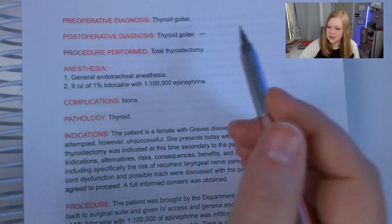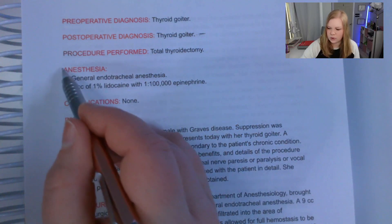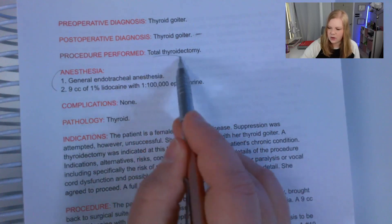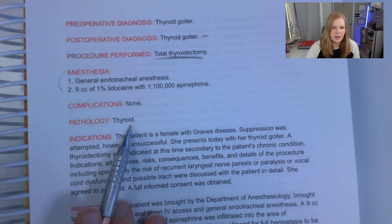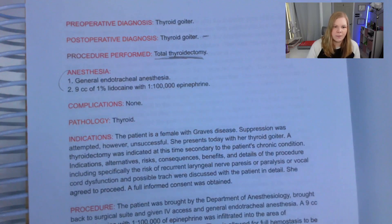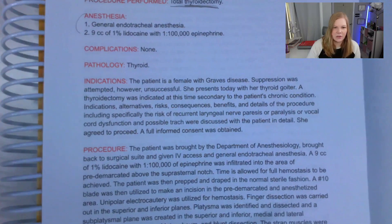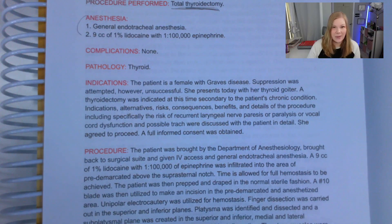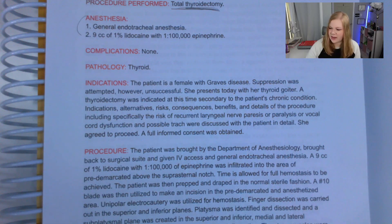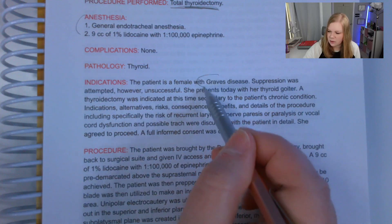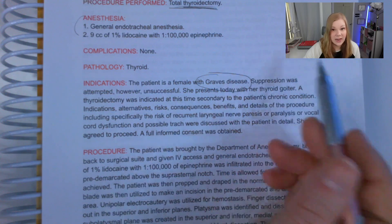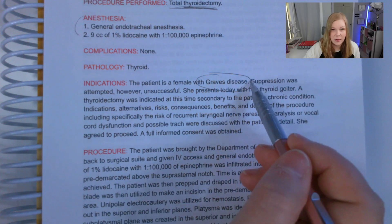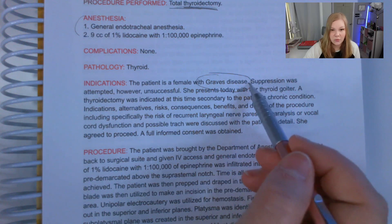Here's our anesthesia. We're not coding for anesthesia services — we're going to code for the surgery, the total thyroidectomy. No complications. The pathology came back as a thyroid goiter. Here are our indications for the procedure — a little background on what's going on. This is a female with Graves' disease, and that is actually something we can abstract here. Graves' disease is an active diagnosis, so we should put that on the claim form as a coder.